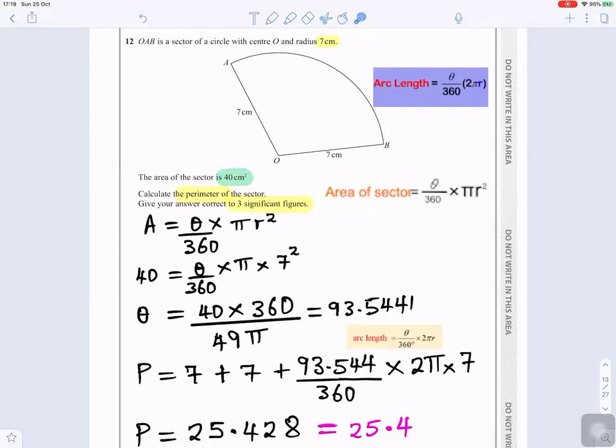Plus we now need to find the arc A, B. The formula to find the length of an arc, you can see it here, is the angle divided by 360 times 2 pi r. The angle divided by 360 times 2 pi r.